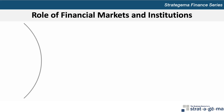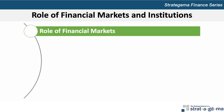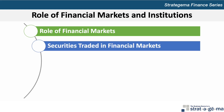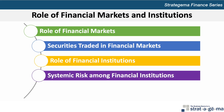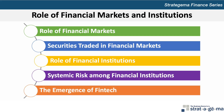Chapter 1 is comprised of five key learning objectives: to describe the types of financial markets that facilitate the flow of funds; to describe the types of securities traded within financial markets; to describe the role of financial institutions within financial markets; to explain how financial institutions are exposed to systemic risk; and to describe the role of fintech in financial markets.